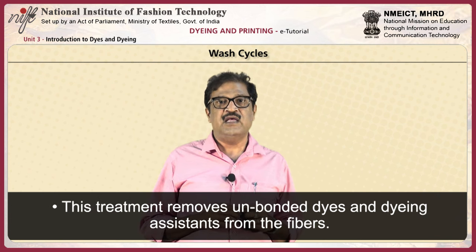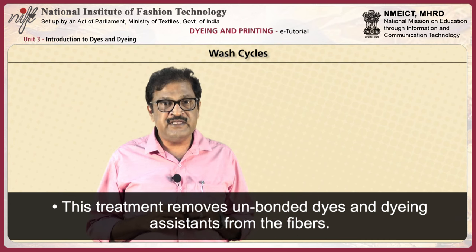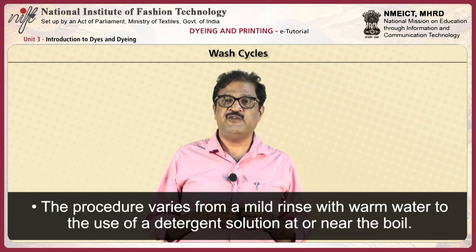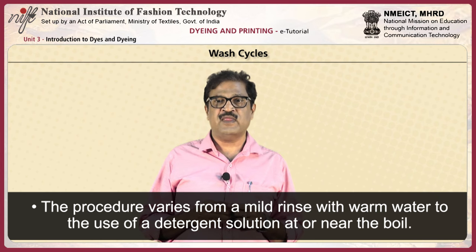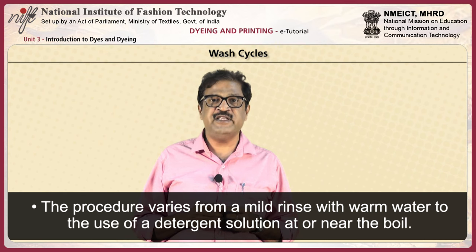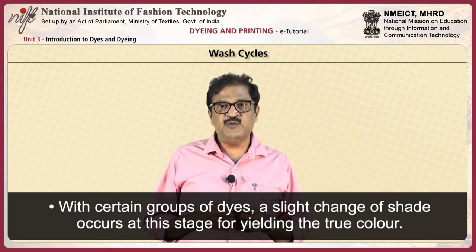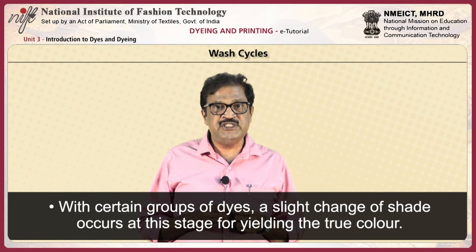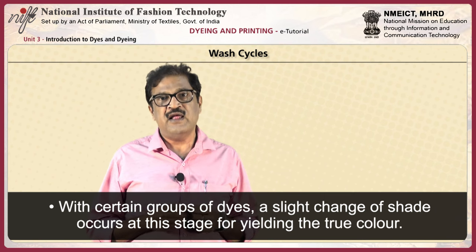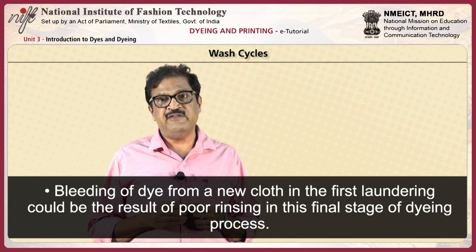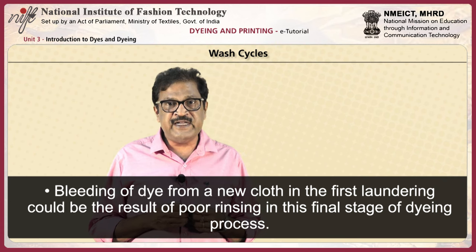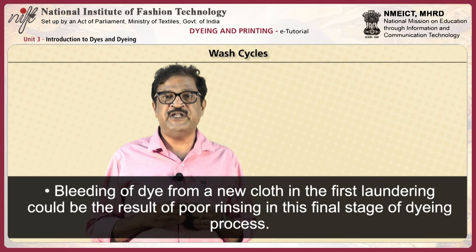Wash cycles: this treatment removes unbonded dyes and dyeing assistants from the fibers. The procedure varies from a mild rinse with warm water to the use of a detergent solution at or near the boil. With certain groups of dyes, a slight change of shade occurs at this stage before yielding the original color. Bleeding of dye from a new cloth in the first laundering could be the result of poor rinsing in this final stage of the dyeing process.